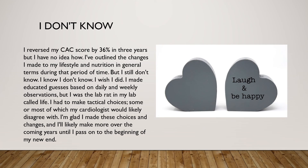I reversed my CAC score by 36% in 3 years, but I have no idea how. I've outlined the changes I made to my lifestyle and nutrition, but I still don't know. I made educated guesses based on daily and weekly observations — I was the lab rat in my lab called life. I had to make tactical choices, some or most of which my cardiologist would likely disagree with. I'm glad I made these choices, and I'll likely make more over the coming years.